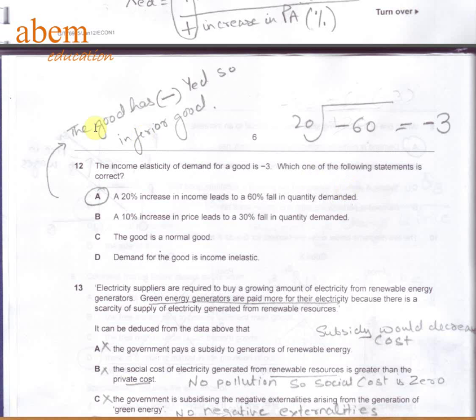In question number 12, the good has negative income elasticity of demand, so it is an inferior good. To work it out: minus 60, because the demand has fallen down by 60 percent, that's minus 60 divided by 20 percent increase in income levels will give you minus 3.